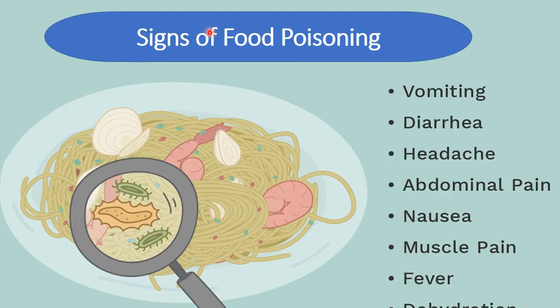An overview of symptoms of these food infections includes vomiting, diarrhea, headache, abdominal pain, nausea, muscular pain, fever, and dehydration. These are the major signs of food poisoning from contaminated food consumption. With this, we have finished the topic of foodborne illness.